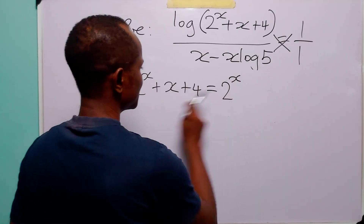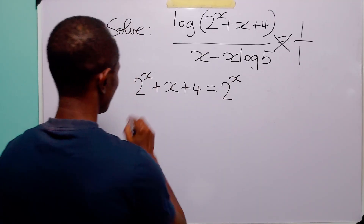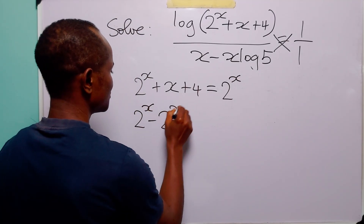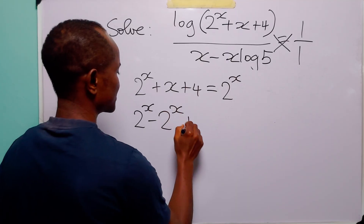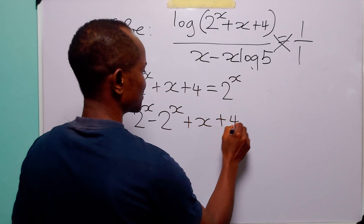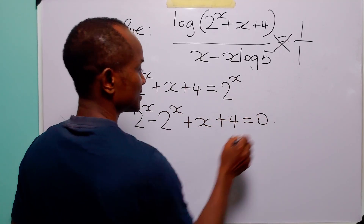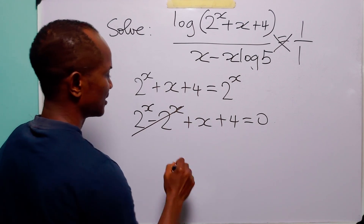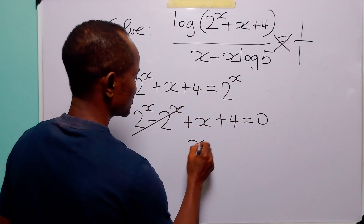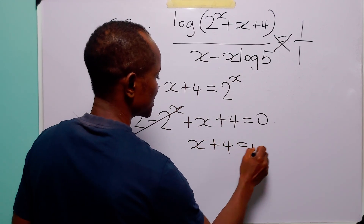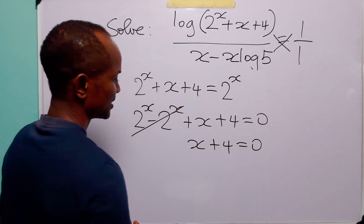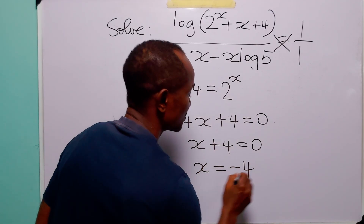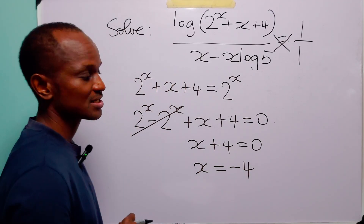Now let us rearrange this equation. We have 2 to the power x minus 2 to the power x plus x plus 4 equals 0. The 2 to the power x terms cancel, leaving us with x plus 4 equals 0, from which we get x equals minus 4.